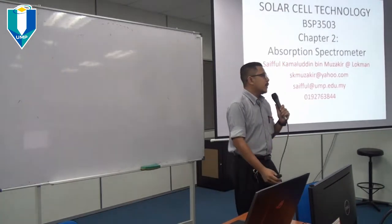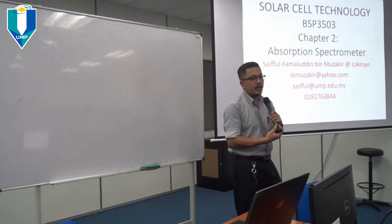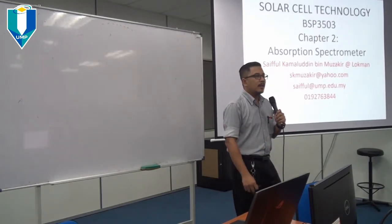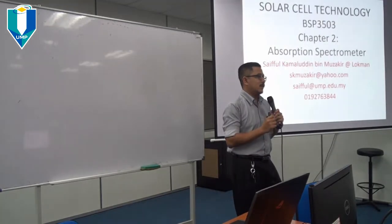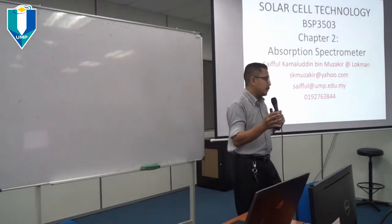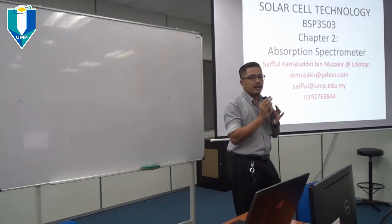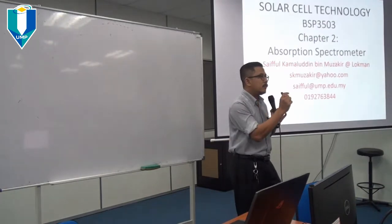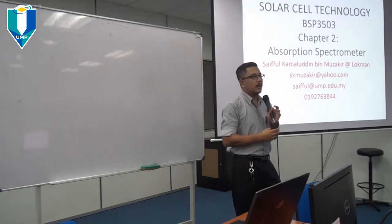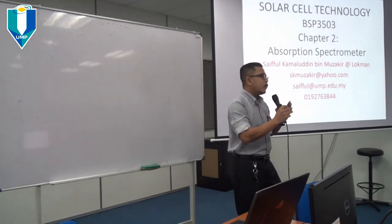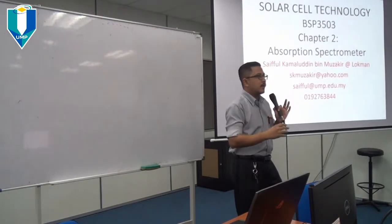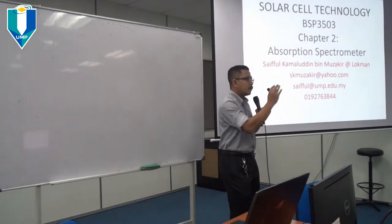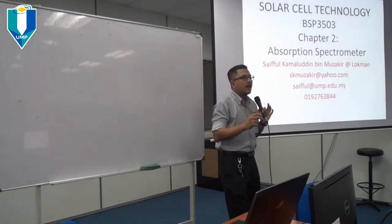We have the instrument to analyse our input, which is the absorption spectrometer, famously known in the physics lab as UV-Vis. The general name is absorption spectrometer, and sometimes people use UV-Vis spectrometer, or UV-NIR spectrometer. UV-NIR means the wavelength studied is from the ultraviolet to near infrared; UV-Vis means from ultraviolet to visible wavelength.